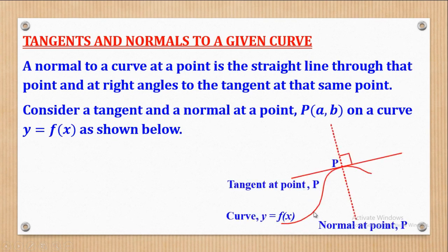This is the curve Y equal to F(X), this is a point P, and at that point there is both a tangent and a normal. You can realize that the tangent and the normal are perpendicular to each other.